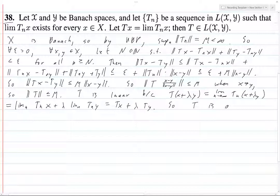So what does this mean? So t is a bounded linear functional. And hence, t is in L(X,Y). And there we go. We're done.